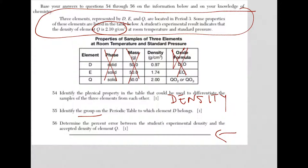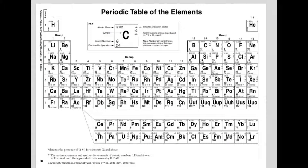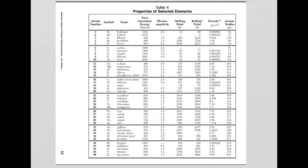One is I have the density, and it's 0.97. I could go to reference table S. Densities are listed here. I'm looking for 0.97, and sure enough, as I go down, it's here. So sodium has a density of 0.97.